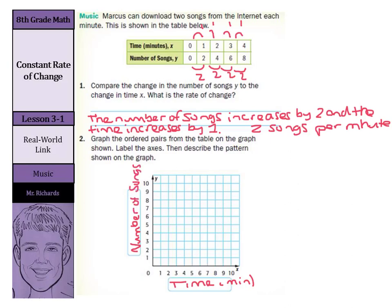As I go to graph this, zero times zero songs. Then we'll have one, two. Two, four. Three, six. And lastly we have four, eight.